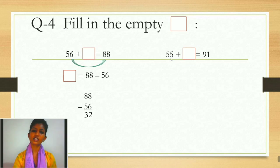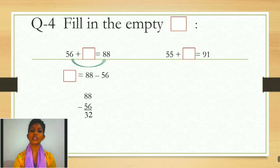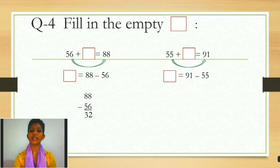Ab ham carry and borrow waala sum karenge. Same process follow karte hain — hum find out karenge. The question is: 55 plus box is equals to 91. Again, I will take this number 55 over to 91. So I can write: box is equals to 91 minus 55.